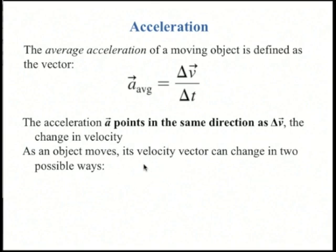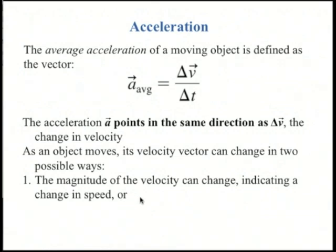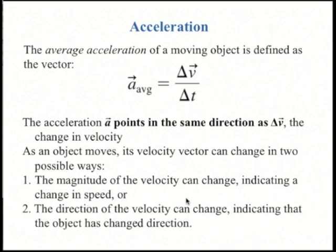So as an object moves, its velocity vector can change in one of two possible ways, or both. One, the magnitude of the velocity can change, so it can speed up or slow down, and two, the direction of the velocity can change. Either one means the object is accelerating.